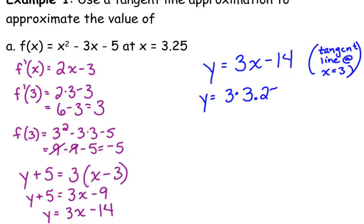Let's go ahead and put it in as a decimal because that's not too bad. 3 times 3.25. Well, 3 times 3 is 9, 3 times 0.25 is 0.75, so that's 9.75. 9.75 minus 14 is what? Negative 4.25.